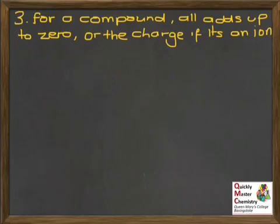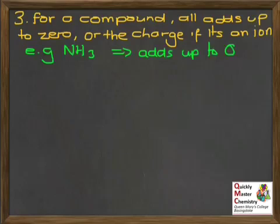Our third rule is that when things are in a compound, the oxidation states within the compound all add up to zero, or if what we're looking at is an ion, the oxidation states will add up to the charge on the ion. A couple of examples to help make this clear. If we're talking about the substance ammonia NH3, then the oxidation states of the one nitrogen and the three hydrogens within it will all add up to zero. It's a compound.